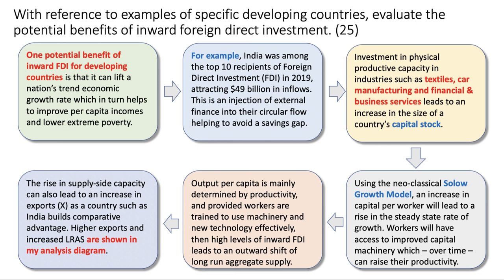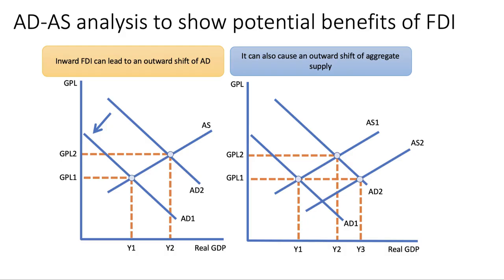FDI can also lead to an increase in exports as a country such as India builds competitive advantage. Higher exports and increased productive capacity are shown in the analysis diagram. I've drawn a fairly straightforward AD/AS diagram showing the impact of an increase in AD and also potentially an increase in aggregate supply from AS1 to AS2. Making the analysis point that FDI has both demand and supply side effects will clearly improve your analysis score in the exam.